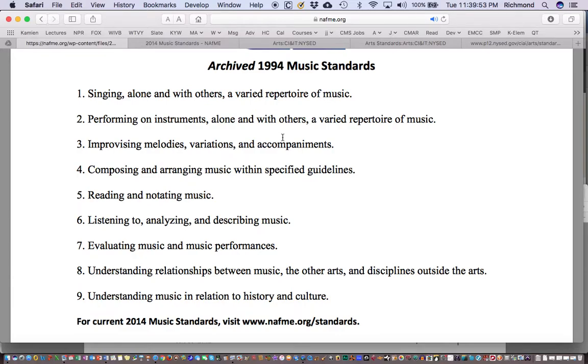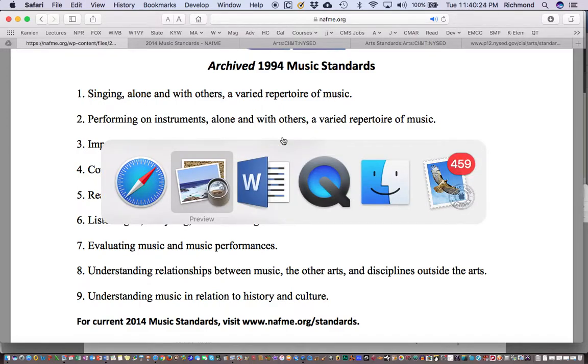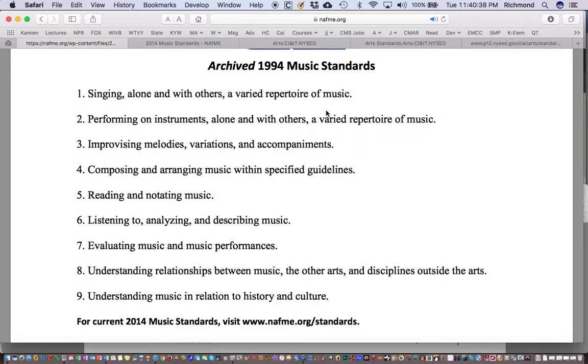Singing alone and with others a varied repertoire of music. Number two, performing on instruments alone and with others a varied repertoire of music. Number three, improvising melodies, variations, and accompaniments. Number four, composing and arranging music within specified guidelines. Number five, reading and notating music. Number six, listening to, analyzing, and describing music. Number seven, evaluating music and musical performances. Number eight, understanding relationships between music, the other arts, and disciplines outside the arts. Number nine, understanding music in relationship to history and culture. When you are writing the standards, all you would do is write down NAFME 1994 and then put the number.